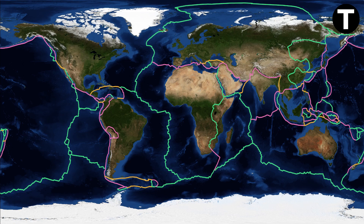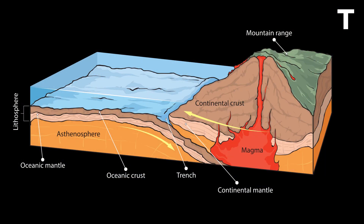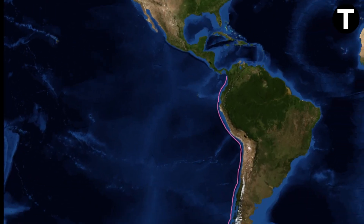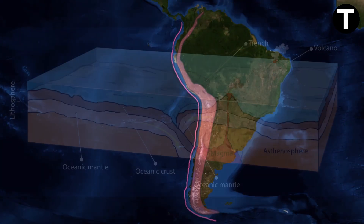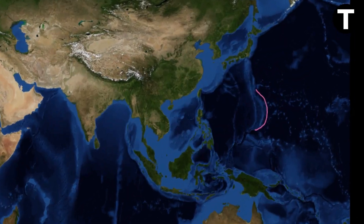Now let's look at convergent plate boundaries, represented in red on the map. Here, two tectonic plates are colliding, and their interactions give rise to some of Earth's most dramatic geological phenomena. When an oceanic plate meets a continental plate, the denser oceanic plate sinks beneath the lighter continental plate in a process known as subduction. The intense pressure and heat generated during subduction create volcanic arcs and mountain ranges, such as the Andes. When two oceanic plates collide, one may be forced beneath the other, resulting in a subduction zone and island arcs like the Mariana Islands along the Mariana Trench.